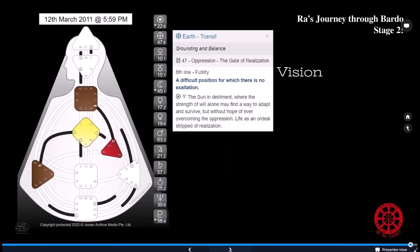Here we have Bardo stage two, vision. The earth transit was going through, again, still the oppression, gate of realization. Sixth line, futility. A difficult position for which there is no exaltation. It's a bold blue line, learning line. The sun in detriment, where the strength of will alone may find a way to adapt and survive, but without hope of ever overcoming the oppression. Life as an ordeal, stripped of realization.